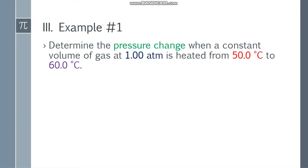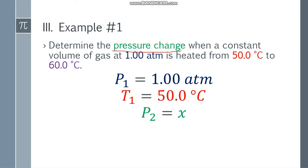Example number 1: Determine the pressure change when a constant volume of gas at 1 atmosphere is heated from 50 degrees Celsius to 60 degrees Celsius. So P1 is 1 atm, T1 is 50 degrees Celsius, the resulting pressure we need to determine, so that's x, and T2 is 60 degrees Celsius.